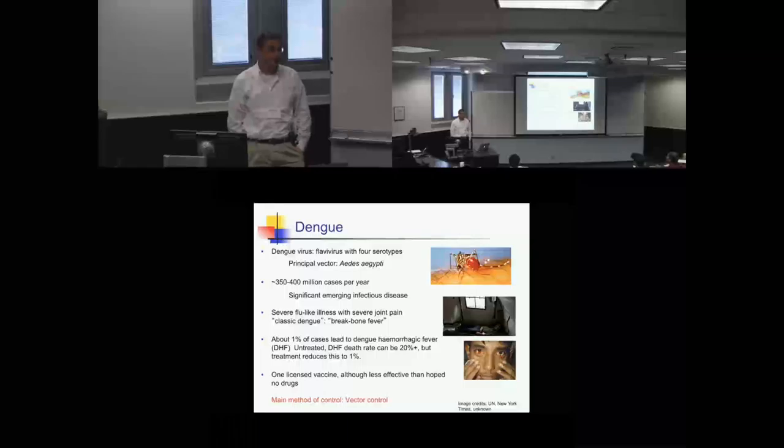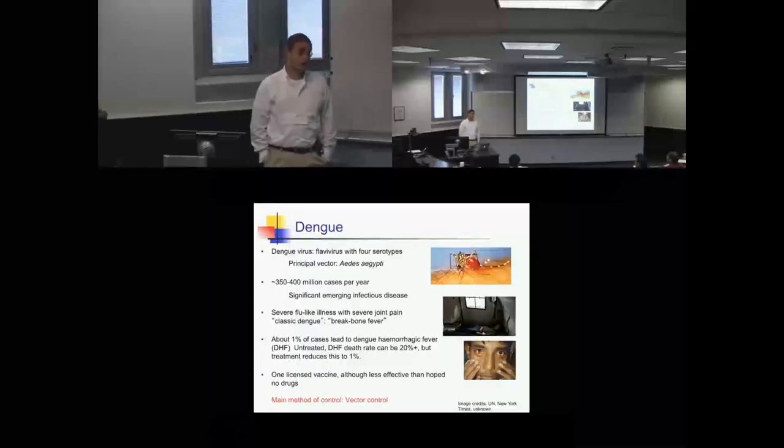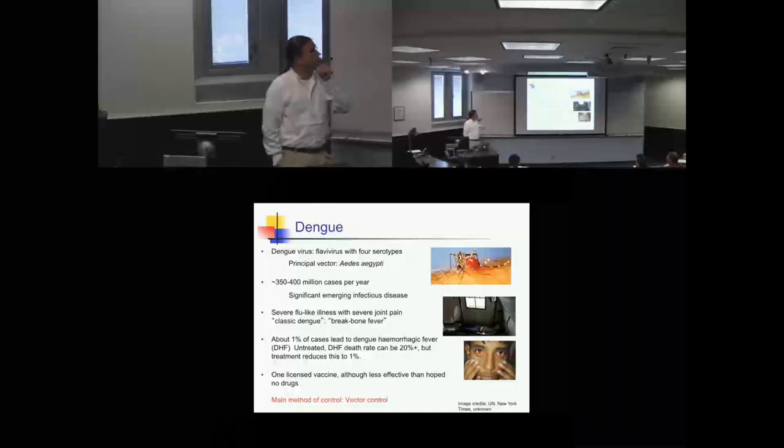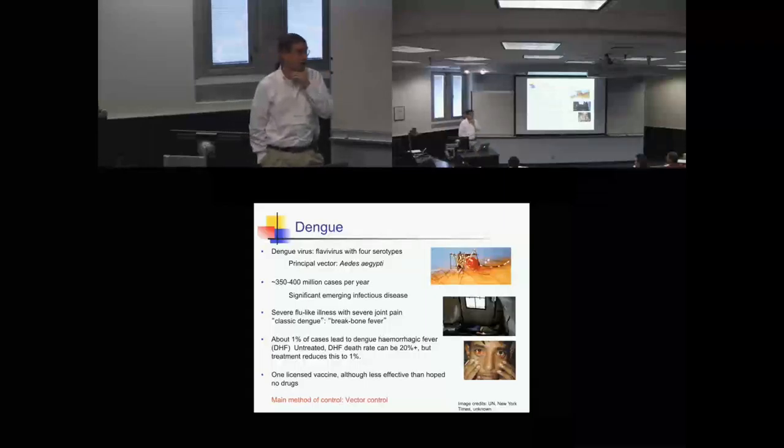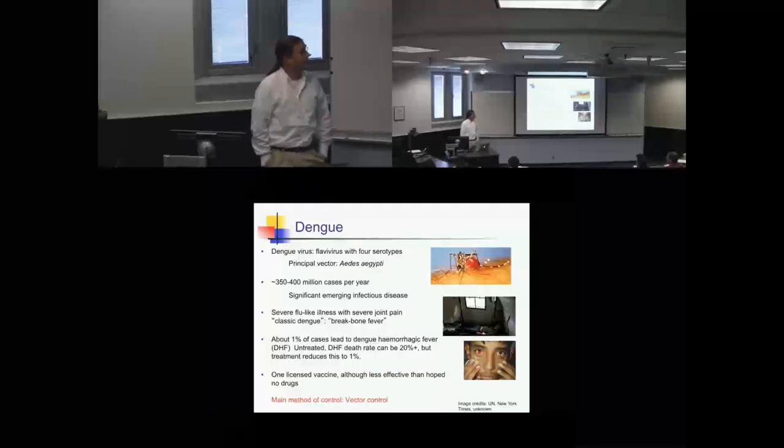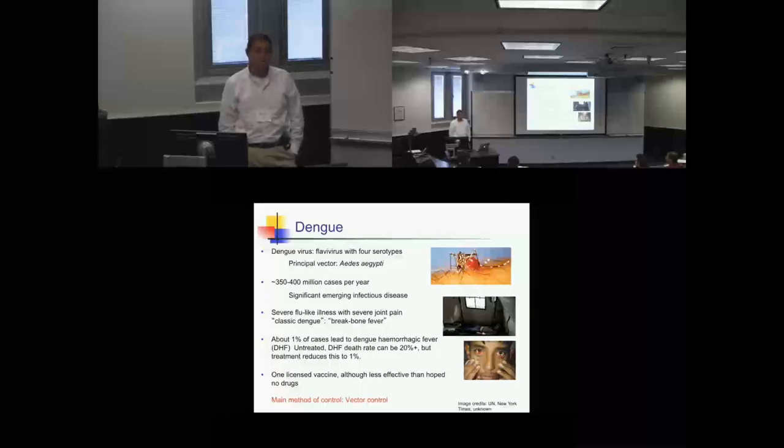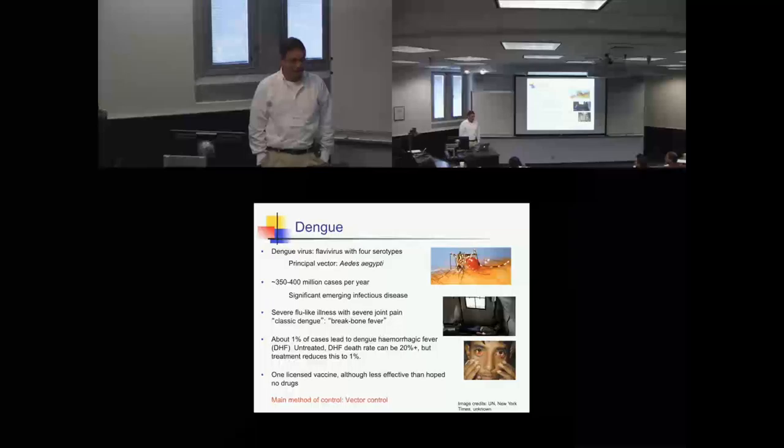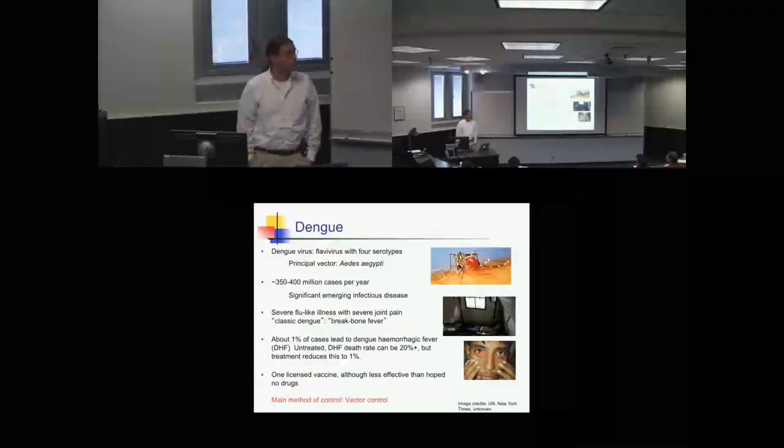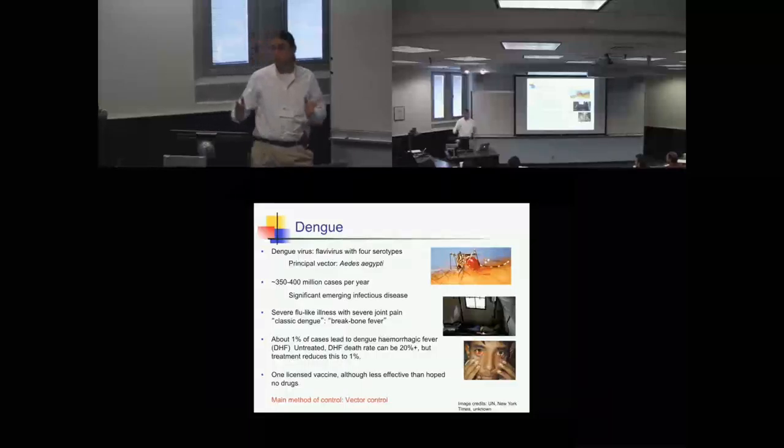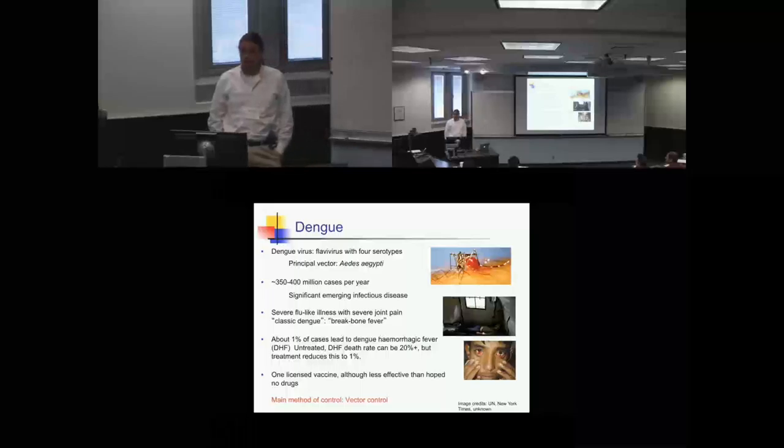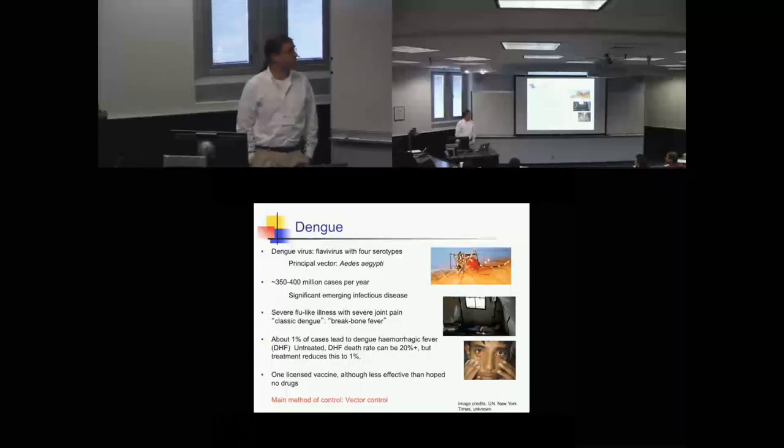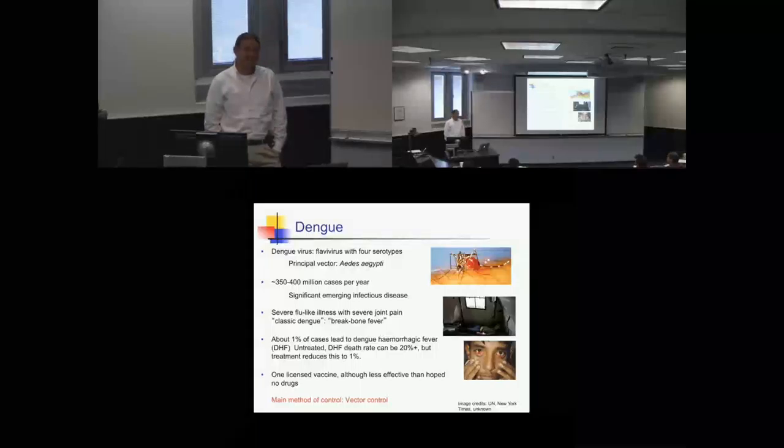The disease on which we work is dengue virus. This is the most significant viral-borne mosquito disease of humans. It's a virus that comes in four immunologically distinct serotypes. So a human can catch four different dengue infections over the course of their life, and it's transmitted by the female Aedes aegypti mosquito, the yellow fever mosquito. It also transmits chikungunya and now Zika virus. Dengue causes something like 400 million cases a year.